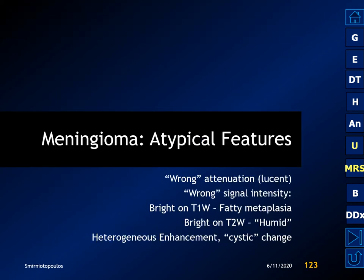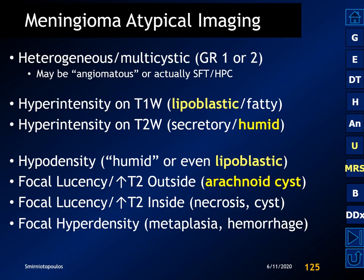Let's discuss some atypical features of meningioma. These include having the wrong attenuation — being lucent instead of hyperattenuating — having the wrong signal, being too bright on T1 or too bright on T2, or being very heterogeneous or demonstrating cystic change. The heterogeneous or multicystic meningioma may be a histologic variant called the angiomatous meningioma, but this is also seen with solitary fibrous tumors and hemangiopericytomas.